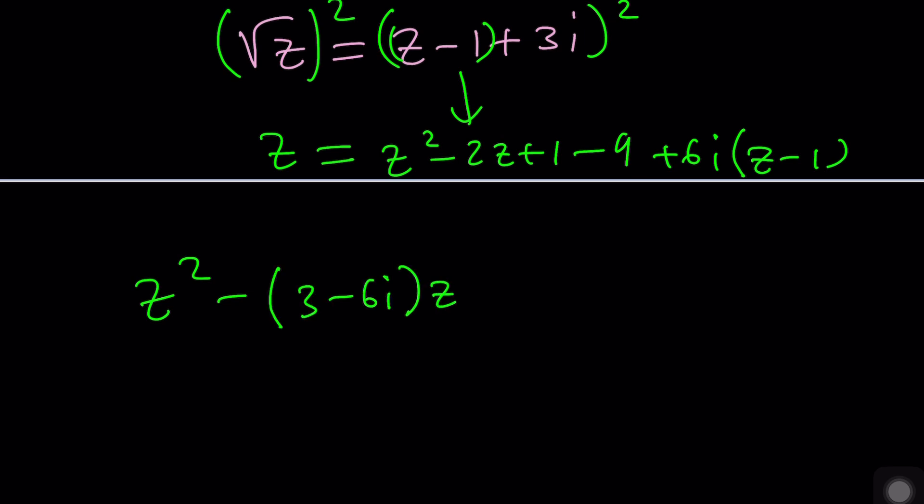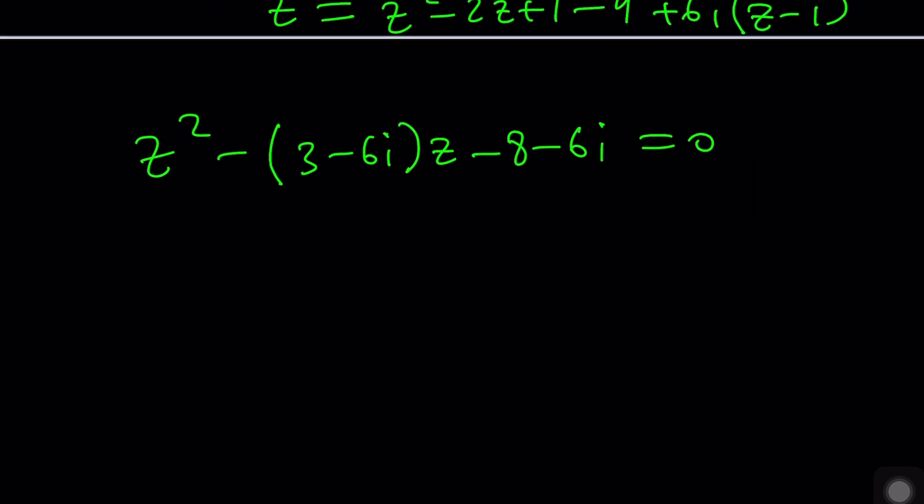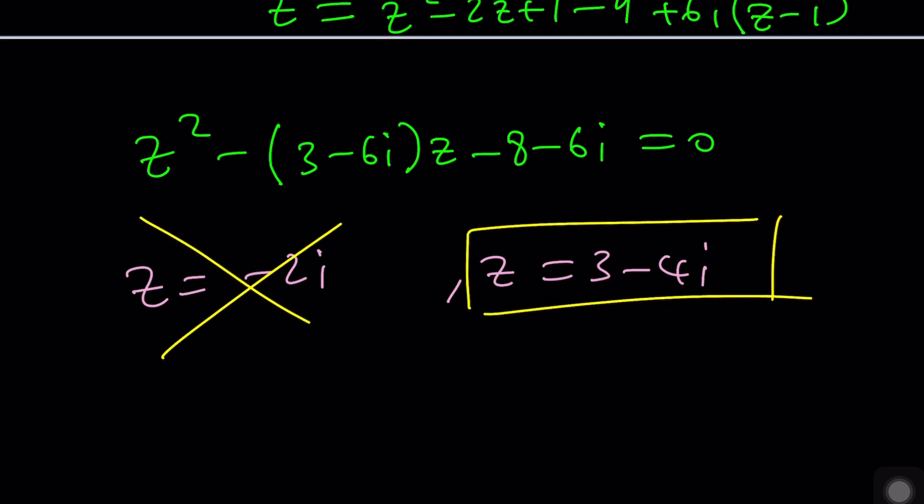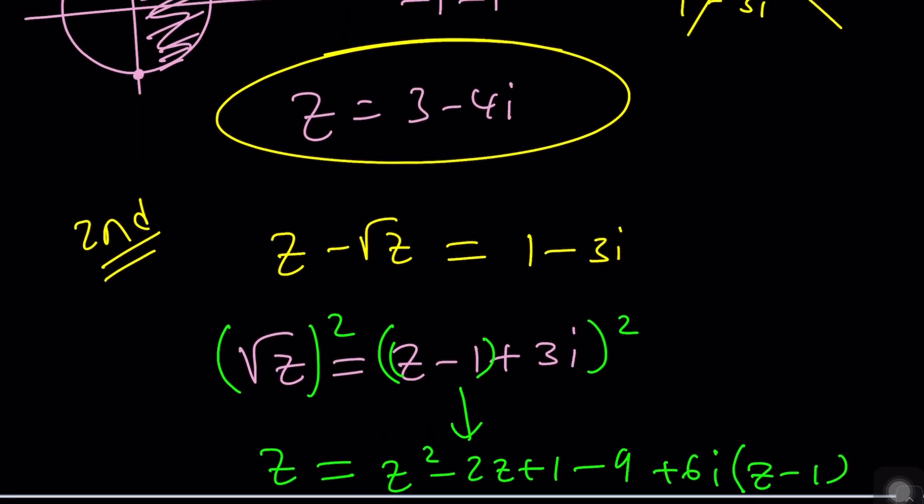Use the quadratic formula because factoring would be crazy. From here you get z equals negative 2i and z equals 3 minus 4i. Guess what? Negative 2i does not work. 3 minus 4i is the only solution that satisfies the original equation. We also verified with the first method.